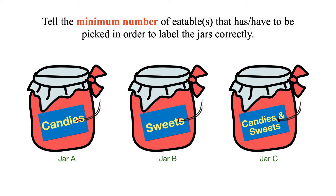Assume that the shape of the candies and sweets are identical and there is no way to differentiate them by touching alone. This is a tricky puzzle. Pause the video and try yourself before checking the solution.